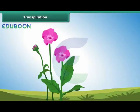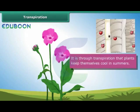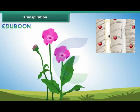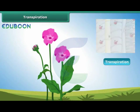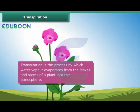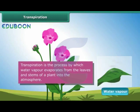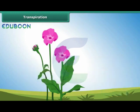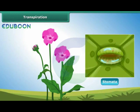An important function of the leaf is to keep the plant cool in summers. This is accomplished through transpiration. Transpiration is the process by which water vapor evaporates from the leaves and stems of a plant into the atmosphere. Small pores called the stomata on the underside of the leaves facilitate transpiration.